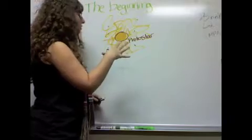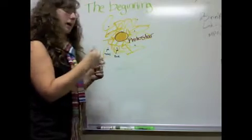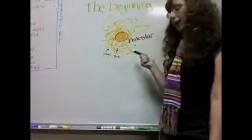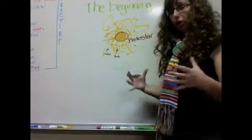As the gas surrounding the protostar cools off, it condenses to form tiny particles of metal and rock. These little particles end up colliding with each other and creating bigger and bigger particles.